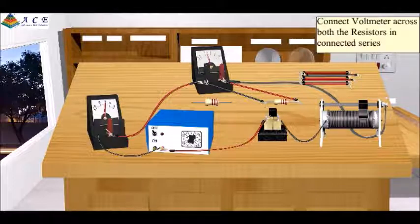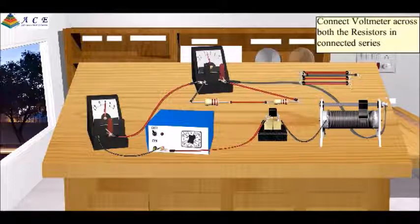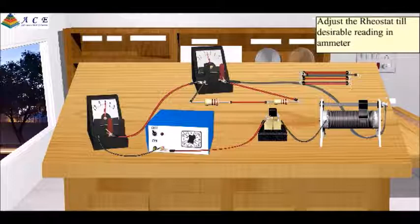Connect the voltmeter across both the resistors connected in series. Adjust the rheostat till the desirable reading in the ammeter. Observe the voltmeter reading.